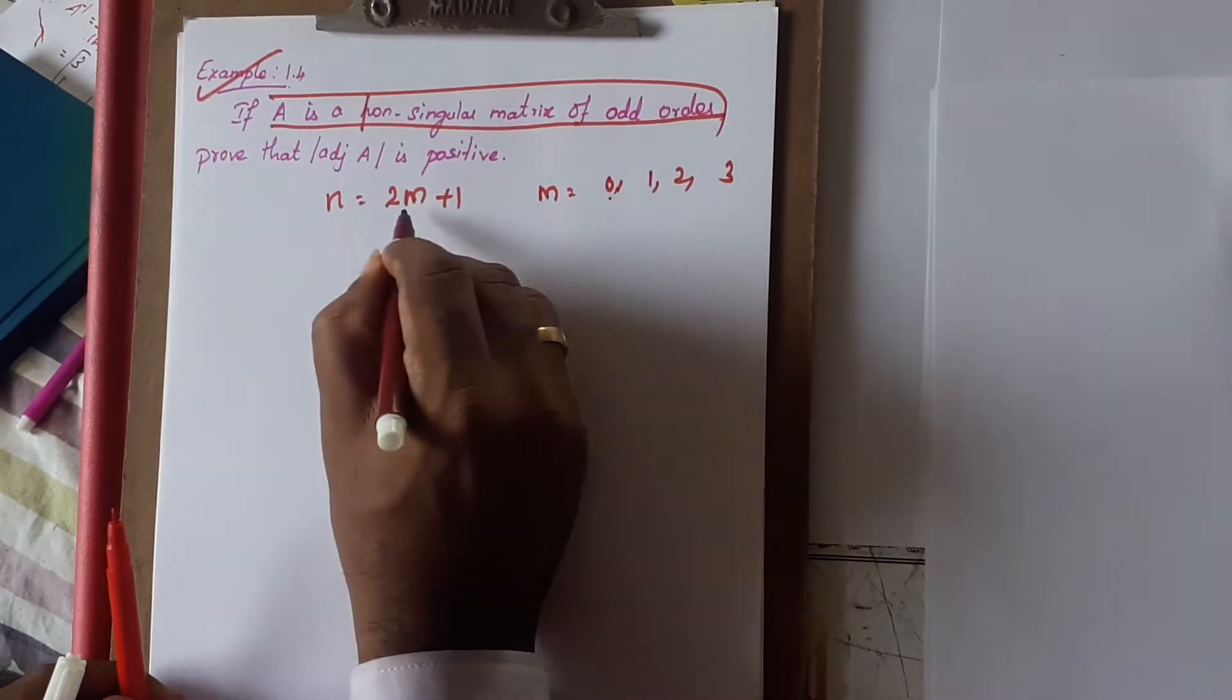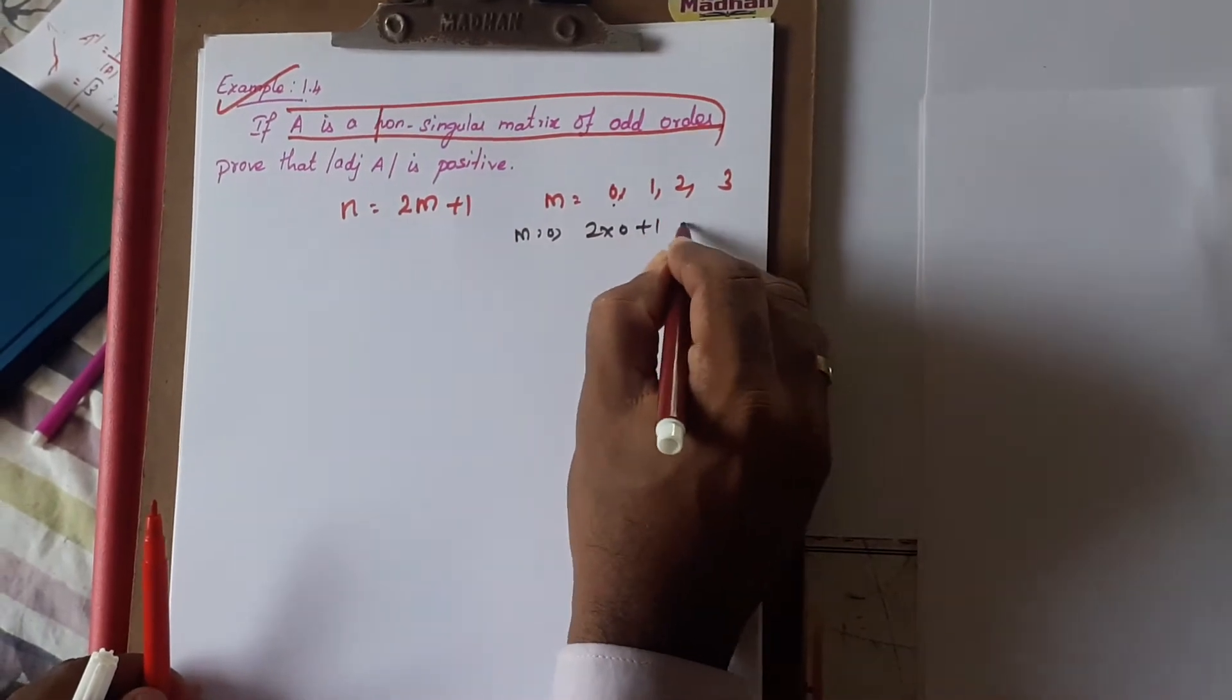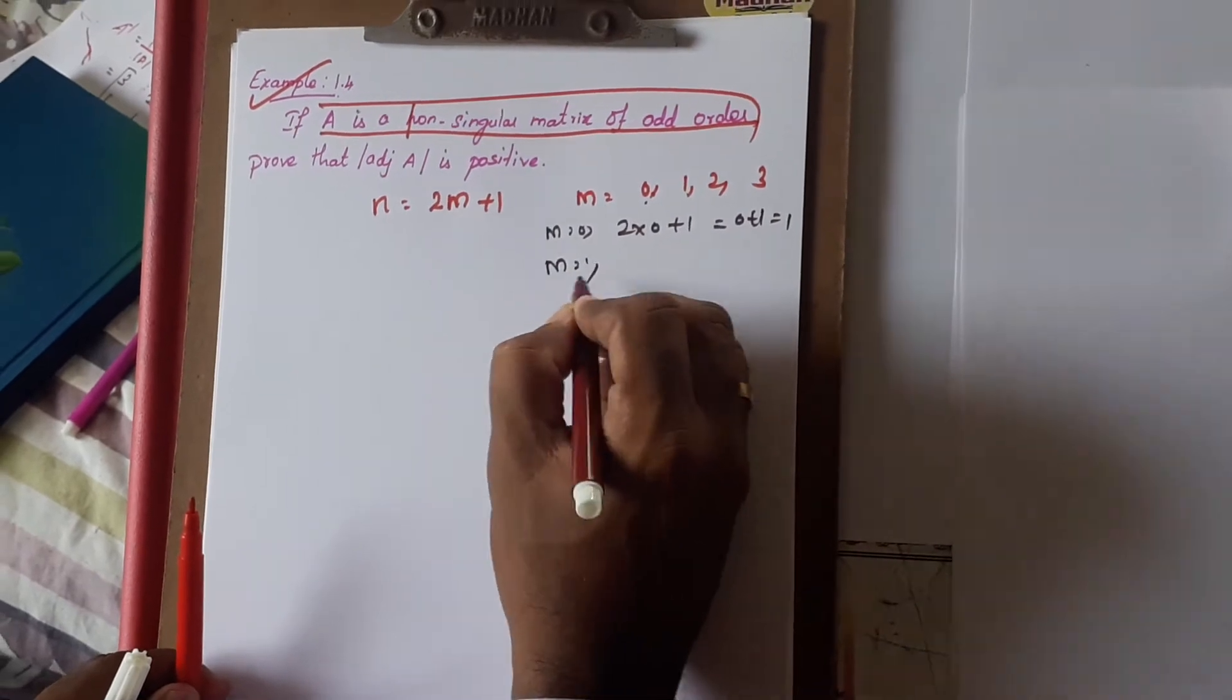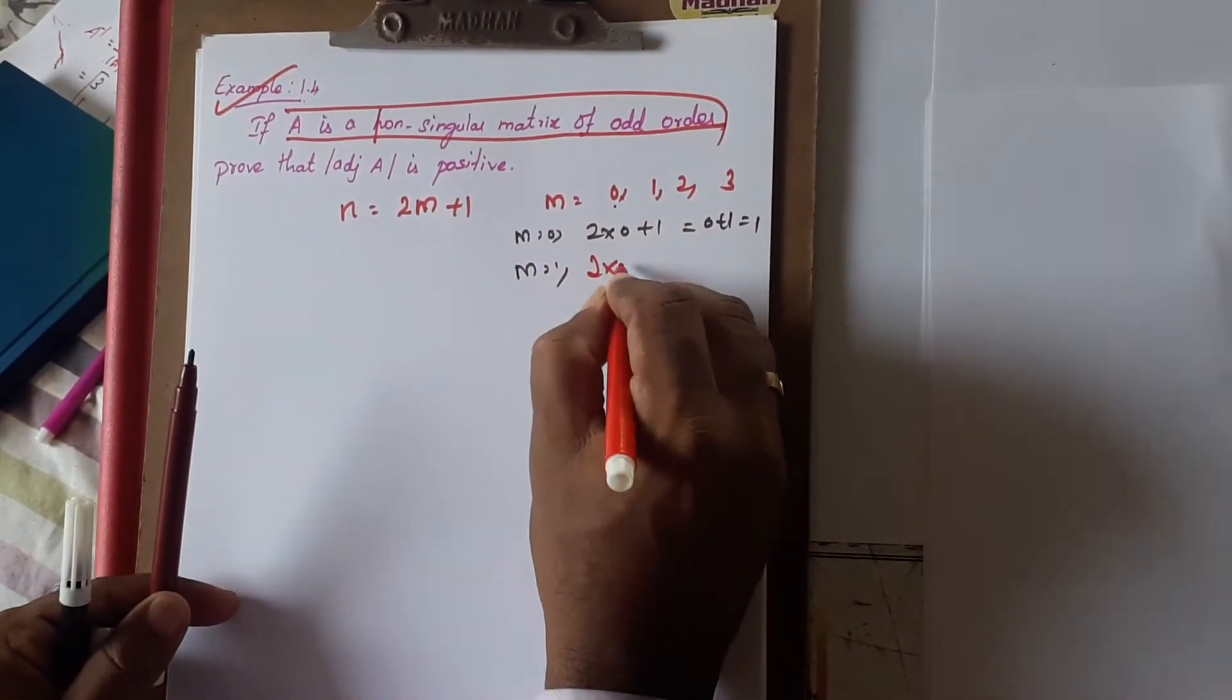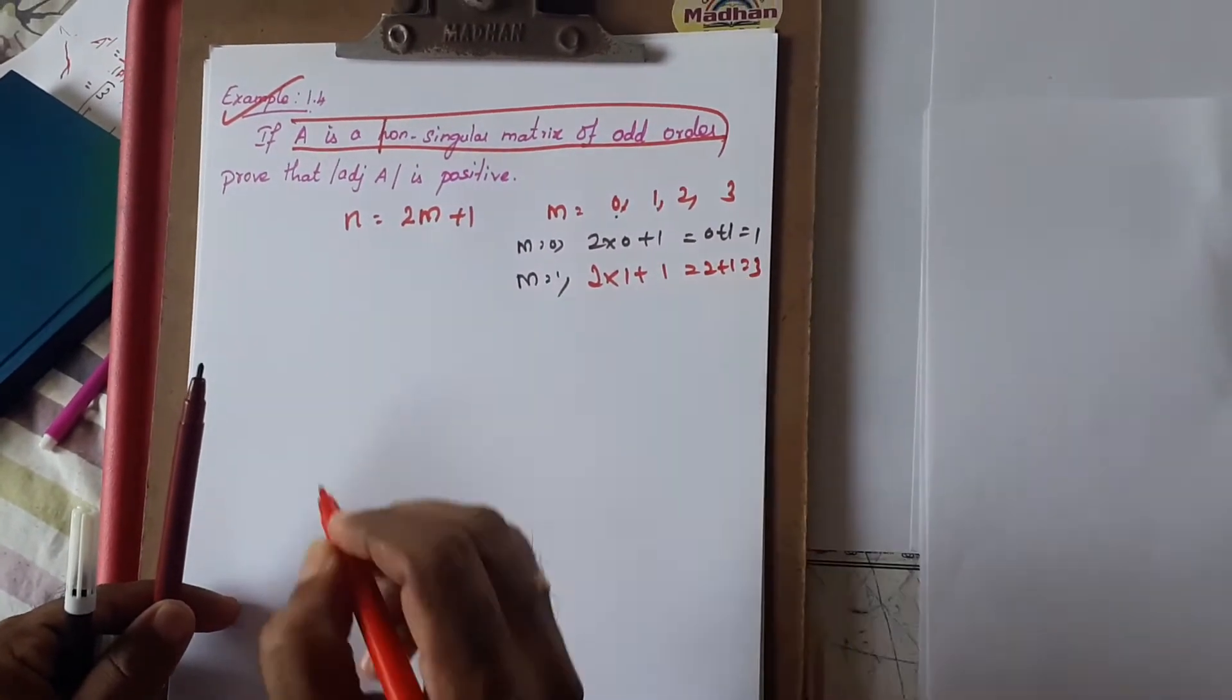First M equals 0 means 2 times 0 plus 1. Therefore 0 plus 1 equals 1. Next condition, M equals 1 means 2 times 1 plus 1 equals 2 plus 1 equals 3.